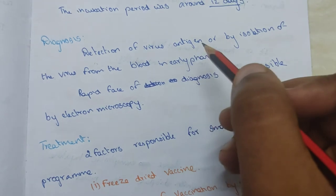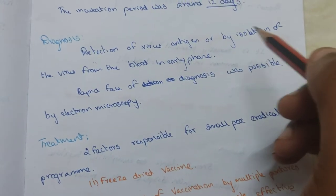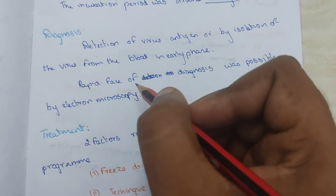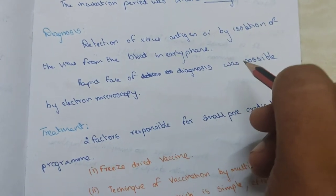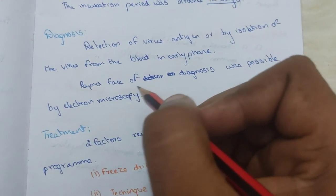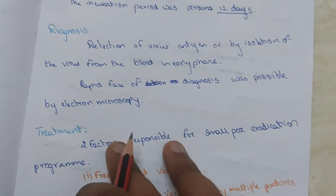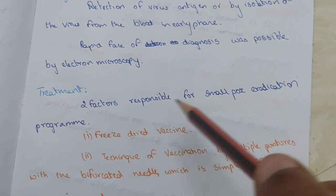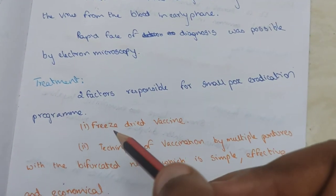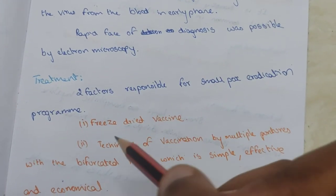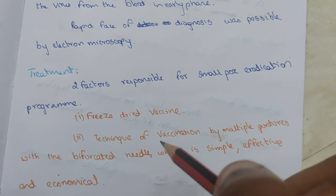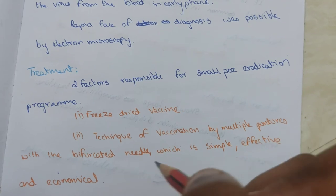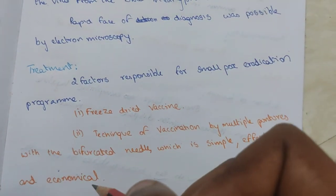Diagnosis is by detection of the virus antigen or by isolation of the virus from blood in the early phase. Rapid diagnosis was possible by electron microscopy. Two factors responsible for the smallpox eradication program were: first, the freeze-dried vaccine, and second, the technique of vaccination by multiple puncture with a bifurcated needle, which is simple, effective, and economical.